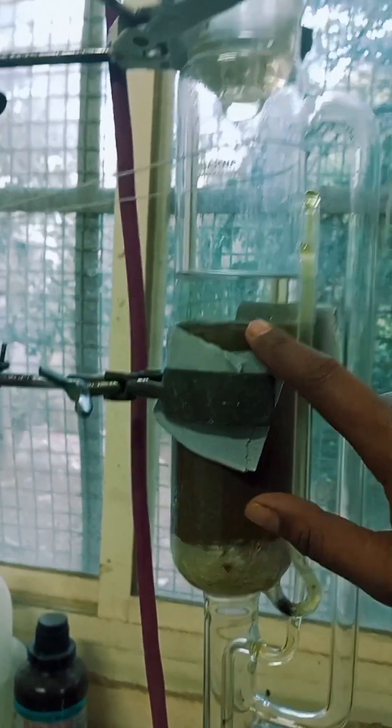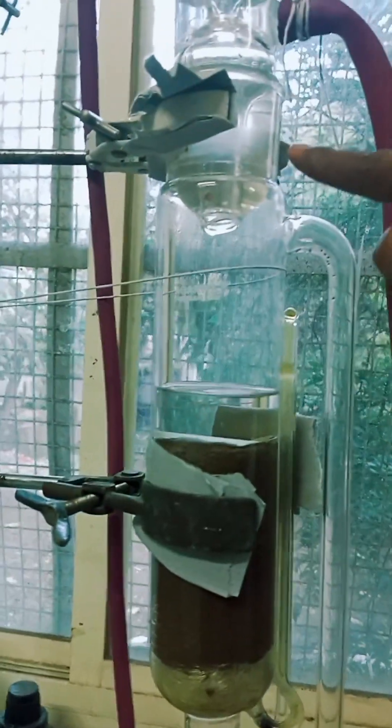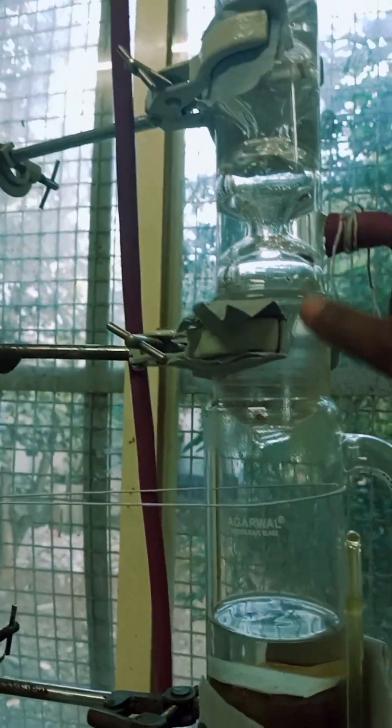This is called the siphon tube of the extraction chamber. Above the extraction chamber, there is the condenser. The condenser is connected with the help of petroleum sealing.